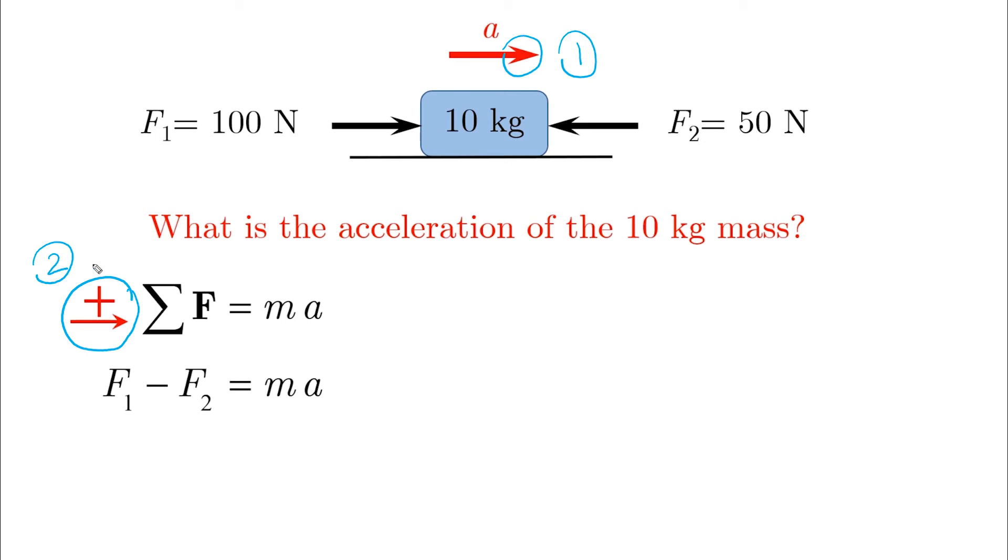So F1 will be positive, F2 will be negative, M is given, we can find A to be plus two meters per second squared, which means two meters per second squared in the same assumed direction of the acceleration.